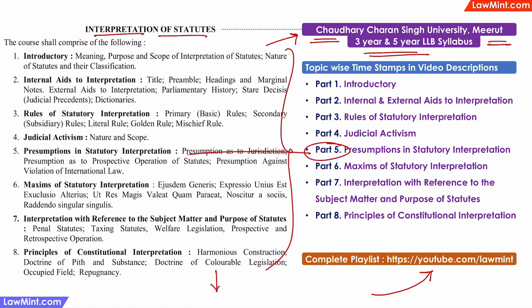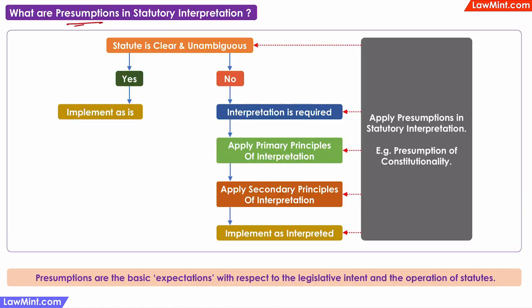This is part 5 and we will talk about Presumptions in Statutory Interpretation. Presumptions are the basic expectations with respect to legislative intent and the operation of statutes. In simple words, presumptions are basic expectations based on common sense, fairness, and the principles of natural justice. These presumptions are used at every step of the interpretation of statutes.